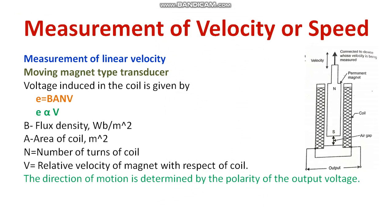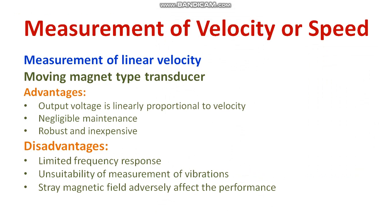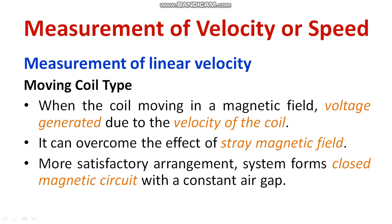Velocity is measured in terms of induced voltage. There are many advantages: maintenance is not necessary every time, construction is robust and quite inexpensive, and output voltage is linearly proportional to velocity, making measurement easy. If I talk about the setbacks: the frequency response is very limited, there is unsuitability for measurement of vibrations since slight movements cannot be measured, and stray magnetic fields adversely affect performance, introducing certain errors that require effective calibration.